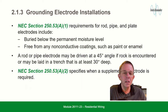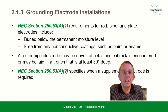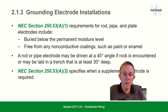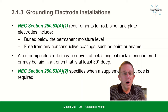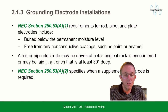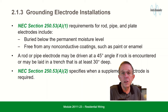Grounding electrode installations: NEC section 250.53 requirements for rod, pipe, and plate electrodes include being buried below the permanent moisture level and free from any non-conductive coatings such as paint or enamel. A rod or pipe electrode may be driven at a 45-degree angle if rock is encountered, or it may be laid in a trench that is at least 30 inches deep.